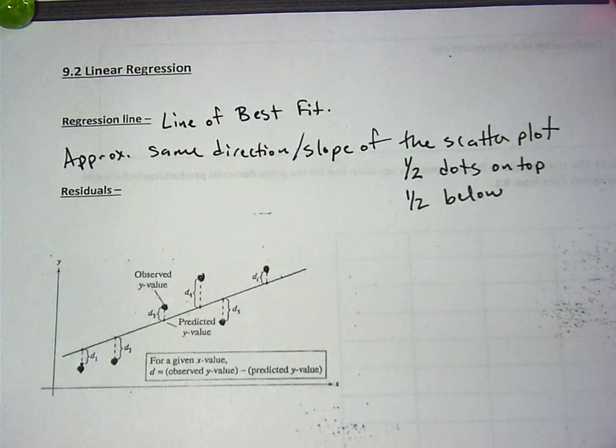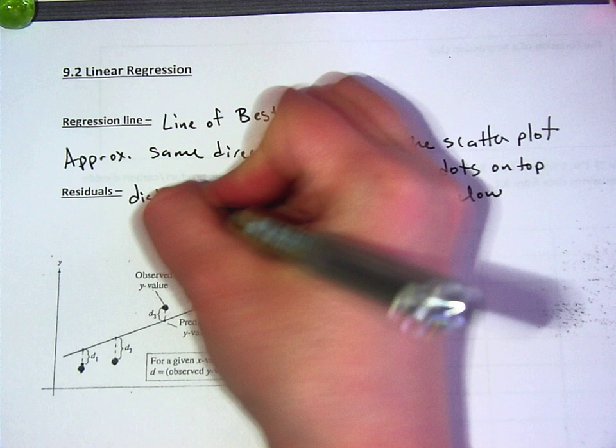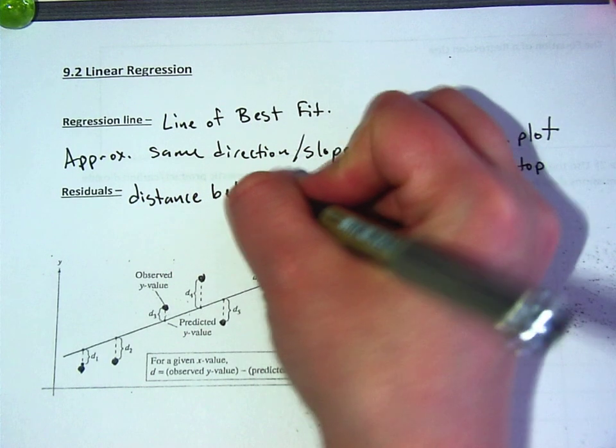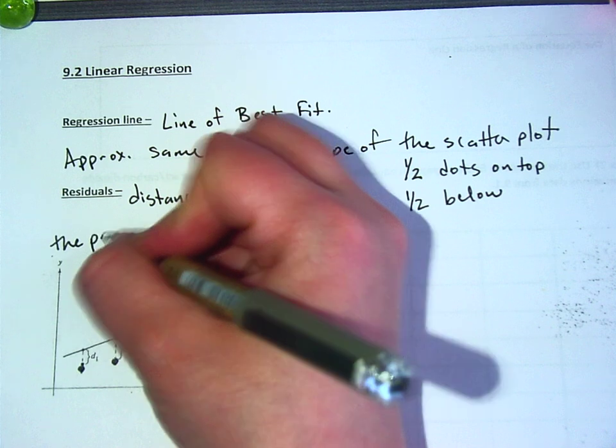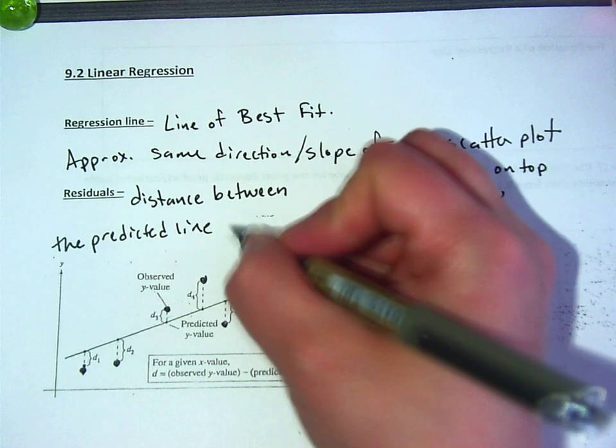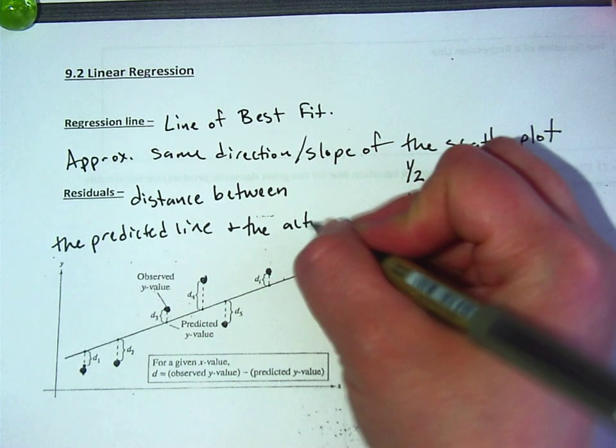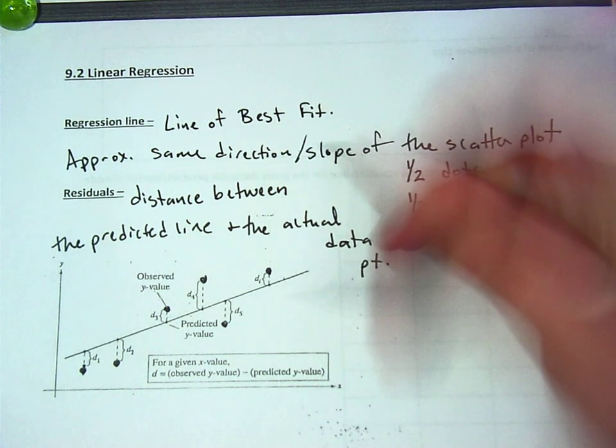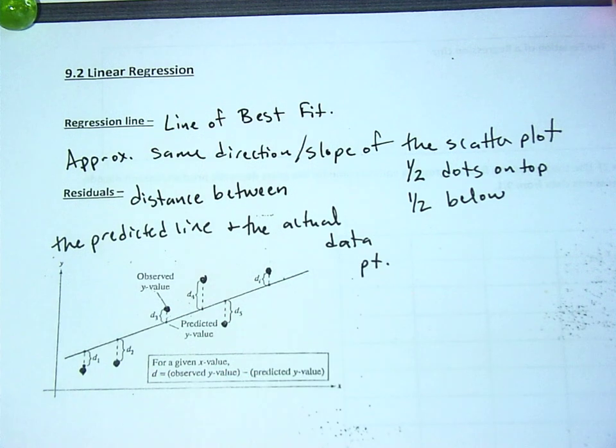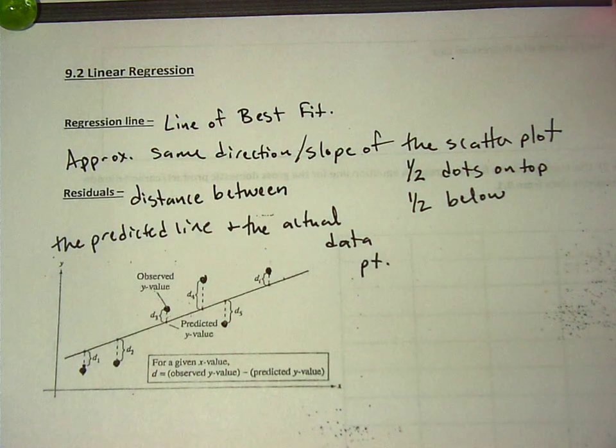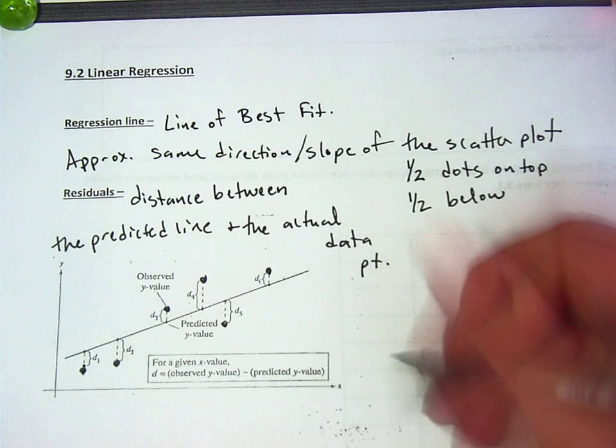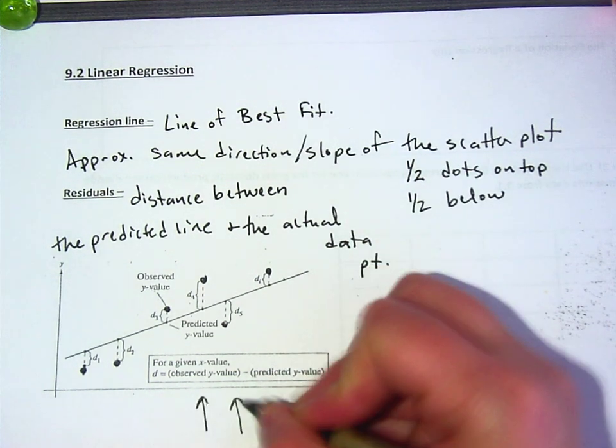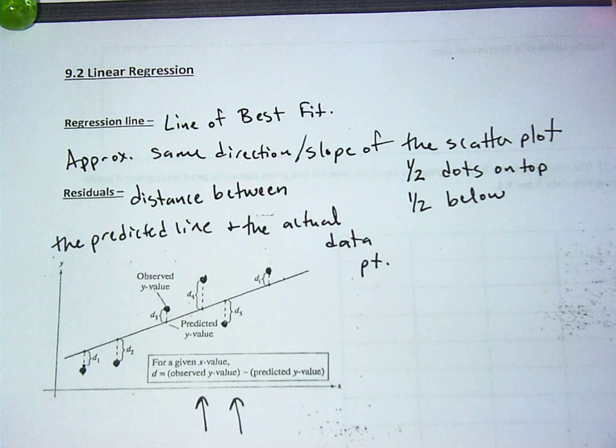Residuals are the distance between the predicted line and the actual data point. Meaning that we're trying to minimize these distances away. Some of them will be below the line. Some of them will be above the line. A residual has this formula right here. Notice this formula. It says you take the observed y value and you subtract the predicted y value.